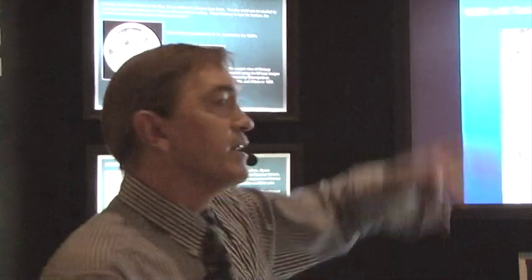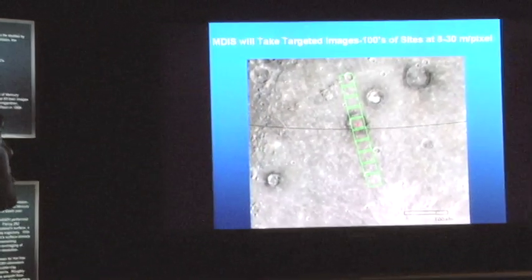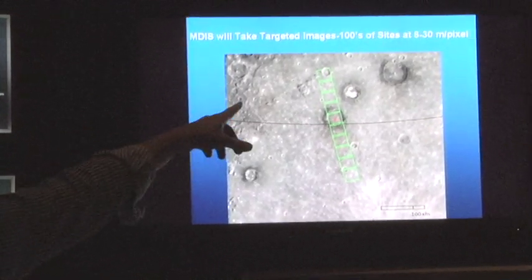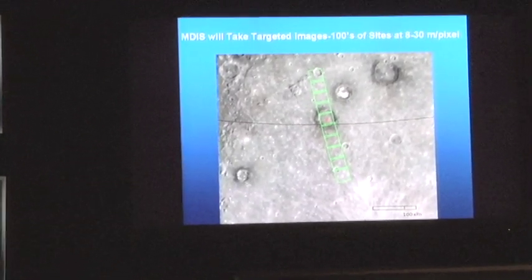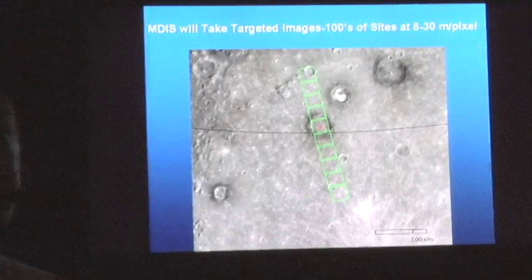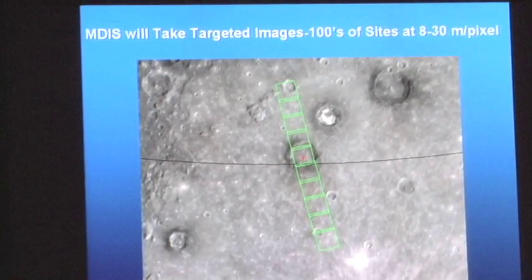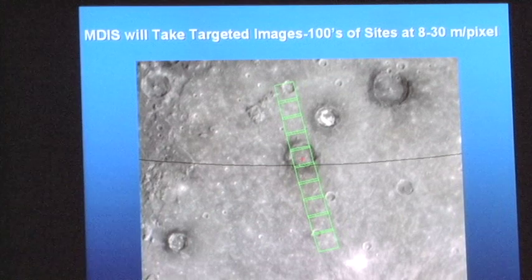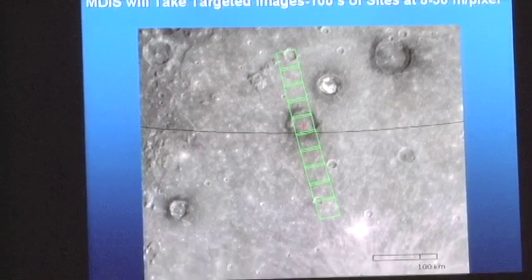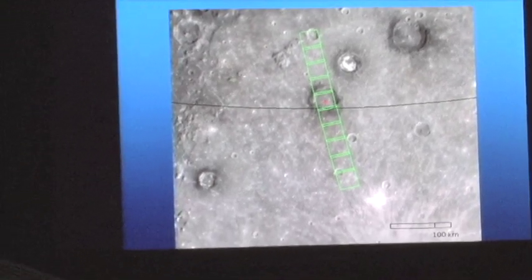With that, in the northern hemisphere where we will be closest to the planet, we will actually be able to get images that are 8 to 30 meters per pixel of the planet, which will be by far the highest resolution images that have ever been obtained for the surface of Mercury. And with that, I'm going to stop.